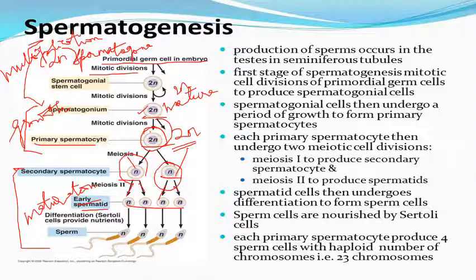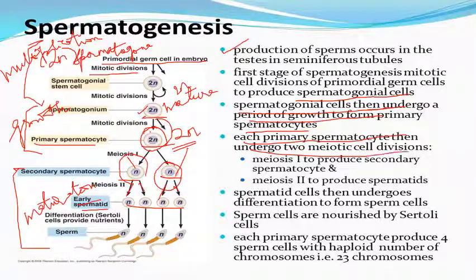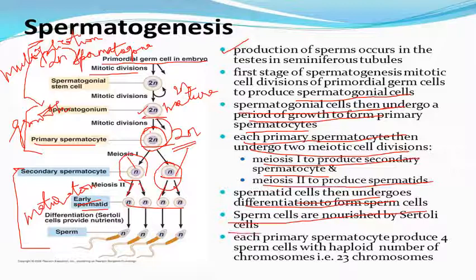To summarize the key points of spermatogenesis: production of sperms occurs in the testis, in the seminiferous tubules. The first stage involves mitotic cell division of primordial germ cells to produce spermatogonial cells. These undergo a growth period to form primary spermatocytes. Each primary spermatocyte undergoes two meiotic divisions — the first produces secondary spermatocytes, and the second produces four spermatids. These spermatids differentiate into sperm cells, nourished by Sertoli cells, and each primary spermatocyte produces four sperm cells with the haploid number of chromosomes, which is 23.